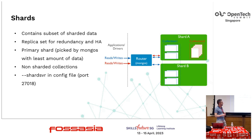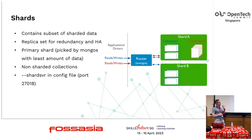Collection one has sharding enabled and will be more or less evenly distributed across shards. Collection two has no sharding enabled and will only exist on shard A, where the primary database for that collection is. This is important because if many collections are not sharded, we potentially create a bottleneck on a single shard, since most queries for those collections will go there.